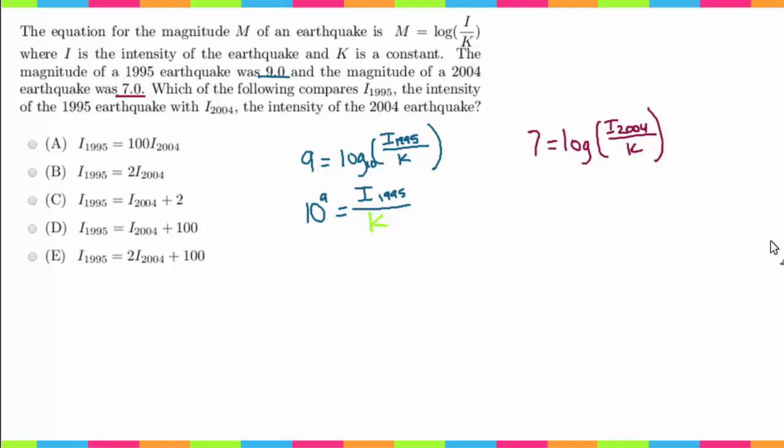So now let's go ahead and do this same step for this second equation. So again, there's an imaginary base 10. That 10 is going to become the base of the exponent, this is going to become the exponent itself, and that's going to be equal to what's in these parentheses here. So I sub 2004 over K. There we go.